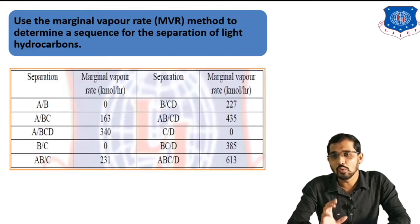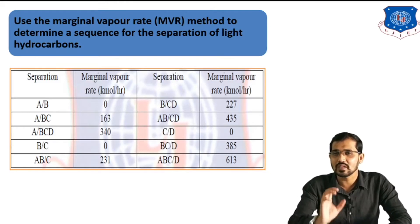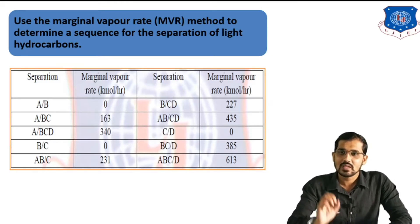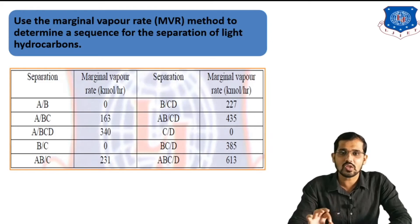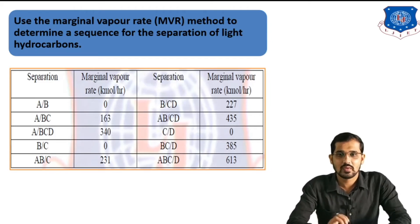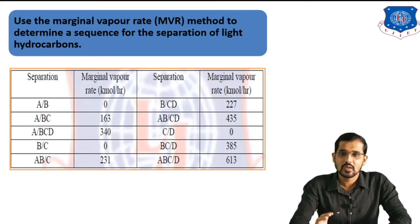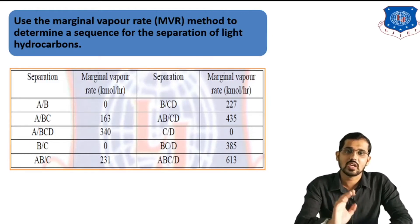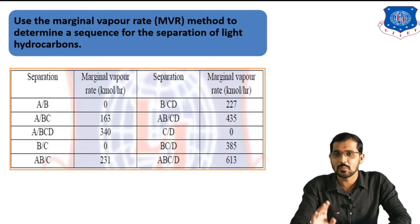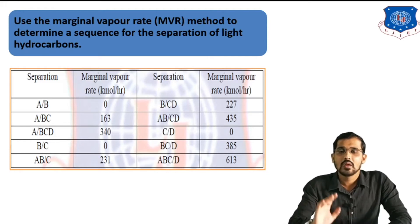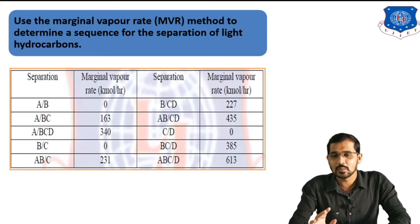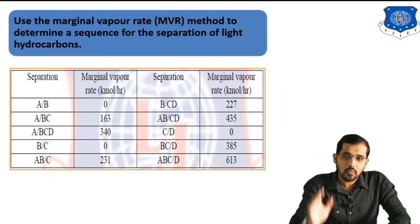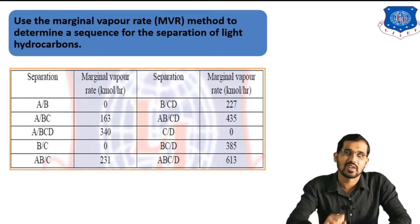Now I will explain how to use the marginal vapor rate method using one numerical example. The problem statement is: use the marginal vapor rate method to determine a sequence for separation of light hydrocarbons. We are given a table of separations with their corresponding marginal vapor rates. For example, A separated from B has marginal vapor rate 0 kmol/hr; A from BC is 163 kmol/hr; A from BCD is 340 kmol/hr; B from C is 0; AB from C is 231; B from CD is 227; ABCD gives 435; C from D is 0; BC from D is 385; ABC from D is 613 kmol/hr.